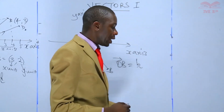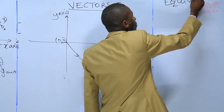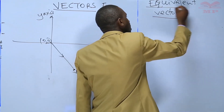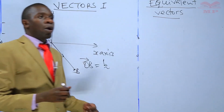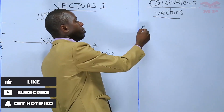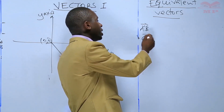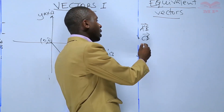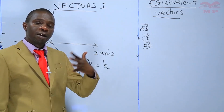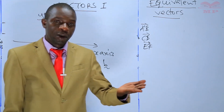Equivalent vectors. You can be given a number of vectors — for example, vector AB, vector CD, and vector EF — and you can be asked to check whether these vectors are equivalent or not.